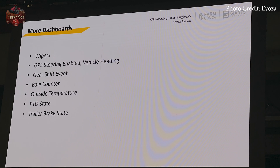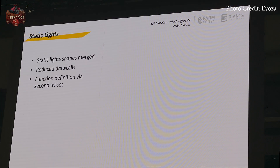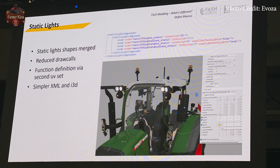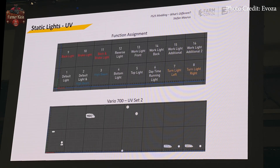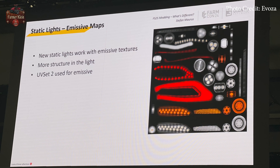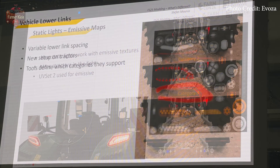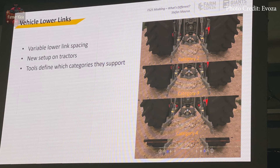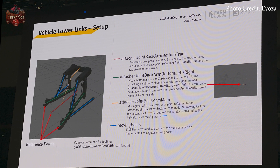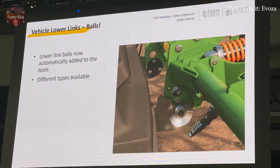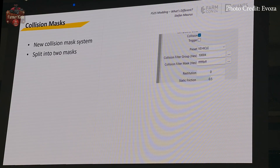Additional dashboard displays will cover bale counters, exterior temperature, PTO status, and trailer brakes. Static lights will be changed by having shapes merged, which reduces overall draw calls, resulting in simpler XML and i3d setup. Static lights will work with emissive textures that bring more structure to the lights. UV2 set will be used for the emissive. The lower link on vehicles' three-point hitch will have variable spacing, and tools will define which categories are supported — three different width spacings are shown. You can pause the video to read through the coding details.